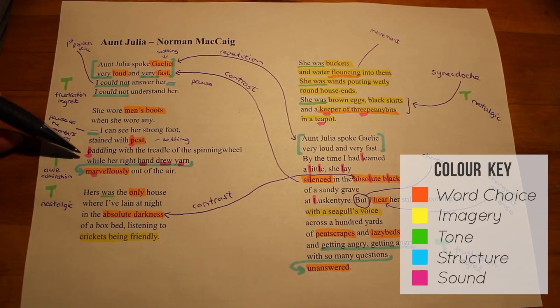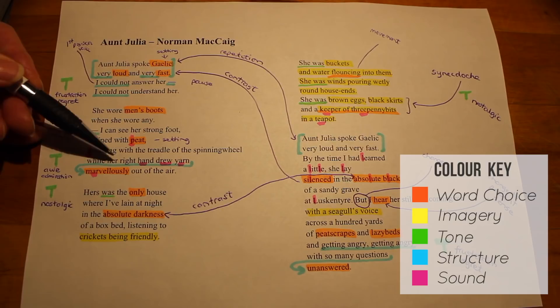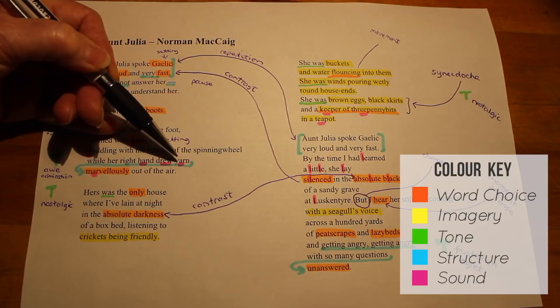She would be spinning the wool from her sheep. There's this lovely depiction of almost magic in the eyes of the young poet, because these first verses are through his eyes as a child, and he describes how her right hand drew yarn. Listen to these lovely long vowels as she pulls the wool out, and then the enjambment emphasizing how marvelous it was in his eyes.